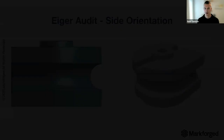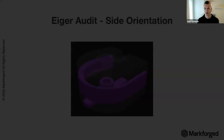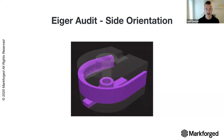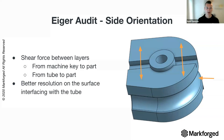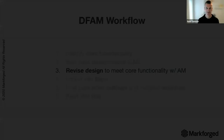Looking at a side orientation: this requires a bit more supports. The shear forces from both the tube and the machine keys will be separating our layers, which is the weakest part — not ideal. However, we get better resolution on the central through-hole and the tube contact surface. There's always a balancing act with orientation selection, just like with supports.